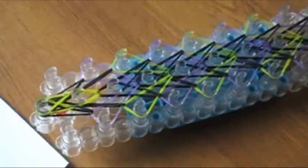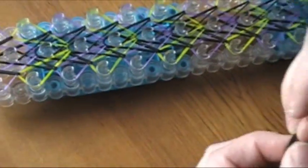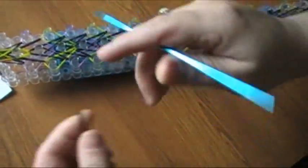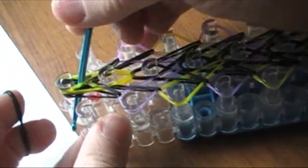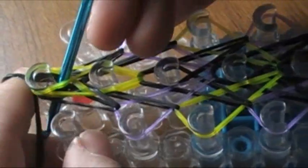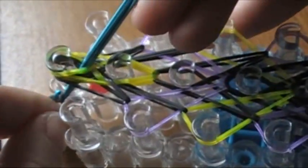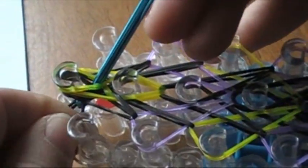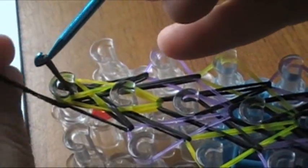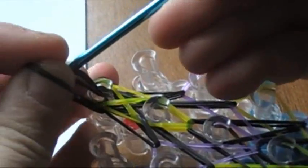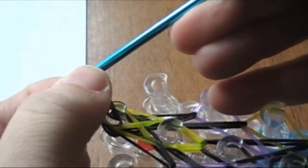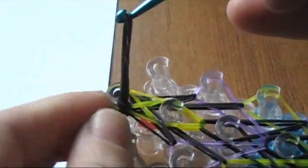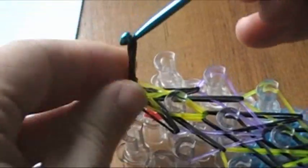We're going to grab two black bands. I'm going to go down inside, grab the bands, pull them up through, and then we're going to make a slip knot, making sure we have all those bands.